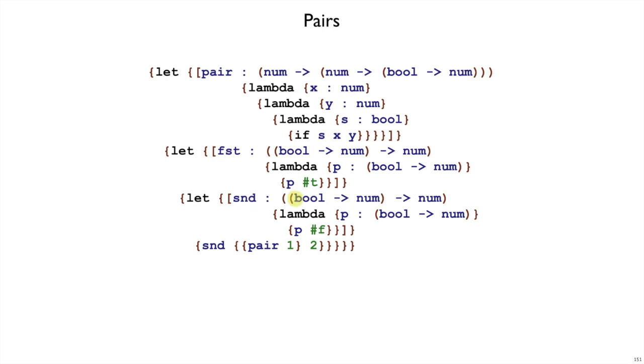So here second wants a pair, which is a boolean to num function - it takes a selector and returns either the first or second part. And then if you give some such a pair, then it will give you back a num out, one of the numbers out. So this P here has type boolean to num, that's the pair type, passes it to false which is allowed and we get a number out and it's all good.